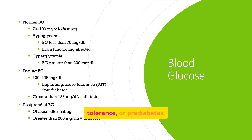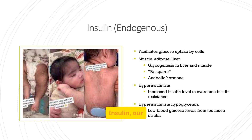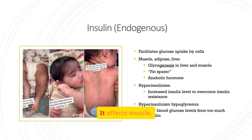Insulin, or endogenous insulin, plays a crucial role in glucose uptake. It affects muscle, adipose, and liver tissue, promoting glycogenesis and acting as a fat sparer. Conditions like hyperinsulinism involve increased insulin levels, either to overcome resistance or due to excessive insulin production.